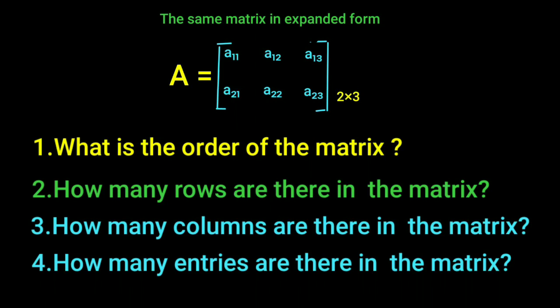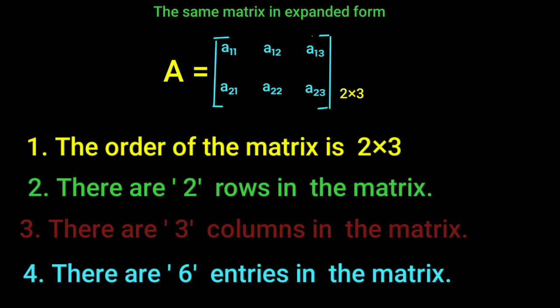The row number, column number. The answer is the same. The order of the matrix is 2 by 3.